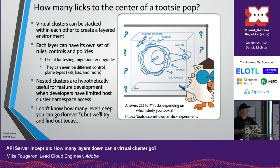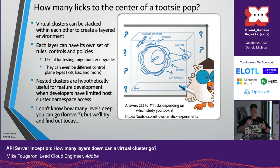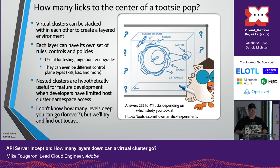Keeping in the theme of this talk — how many licks to the center of a Tootsie Pop — one of the interesting things you can do with vClusters is stack them on top of each other. You can have a virtual cluster inside of a virtual cluster inside of a virtual cluster. That creates a layered environment where you can do some really interesting things. Each cluster can have its own set of policies on top of each other, different RBAC within a sub-cluster.